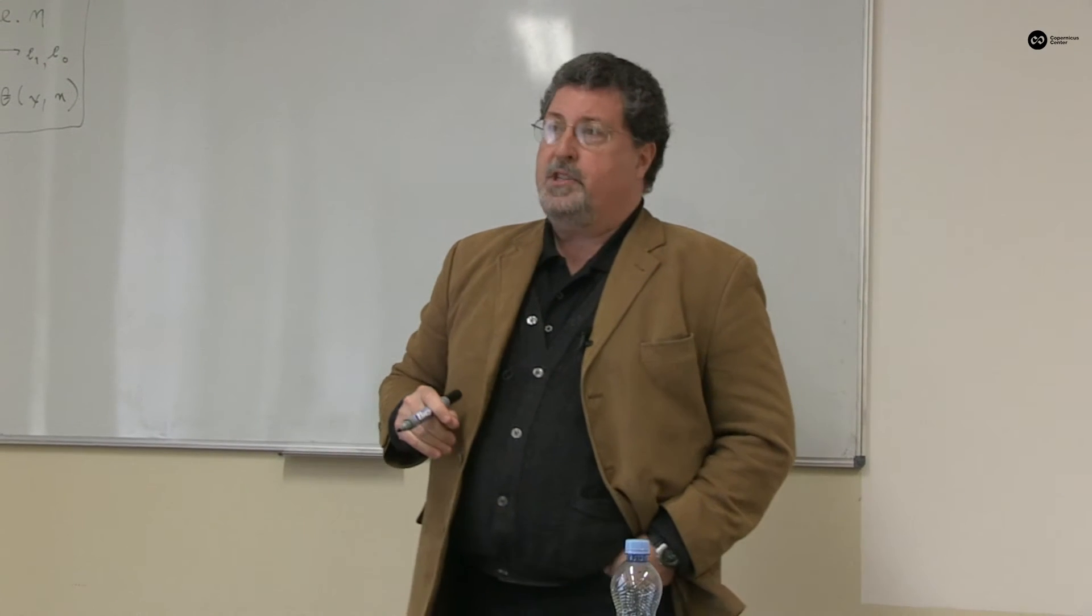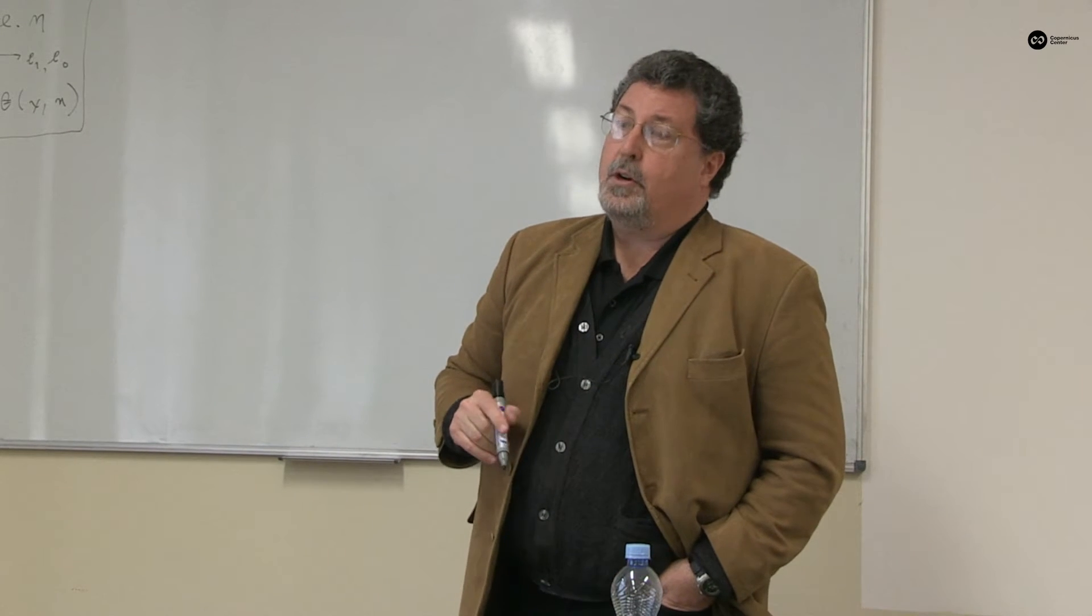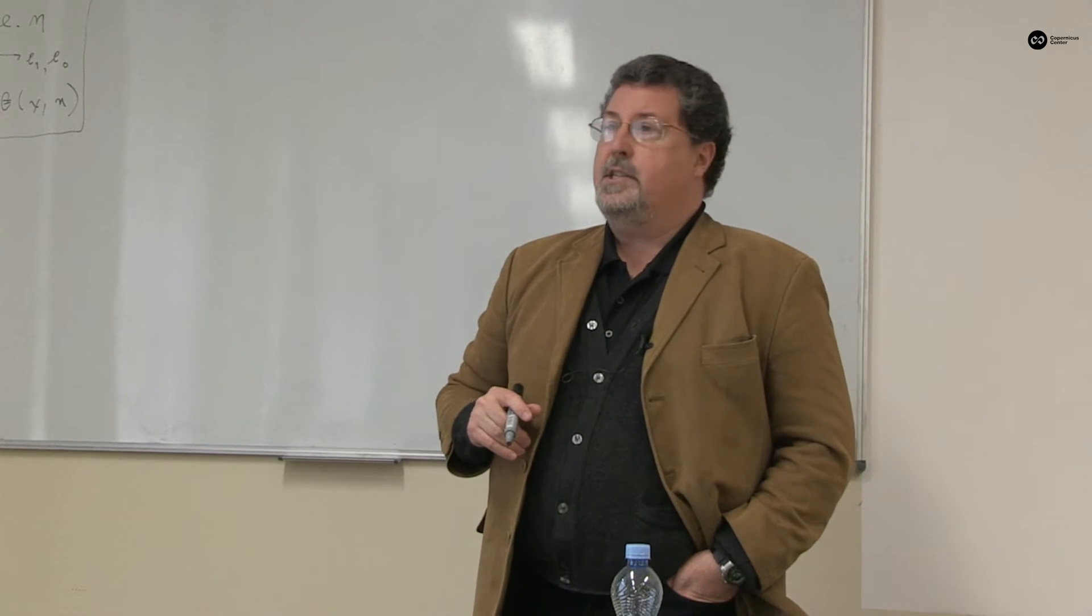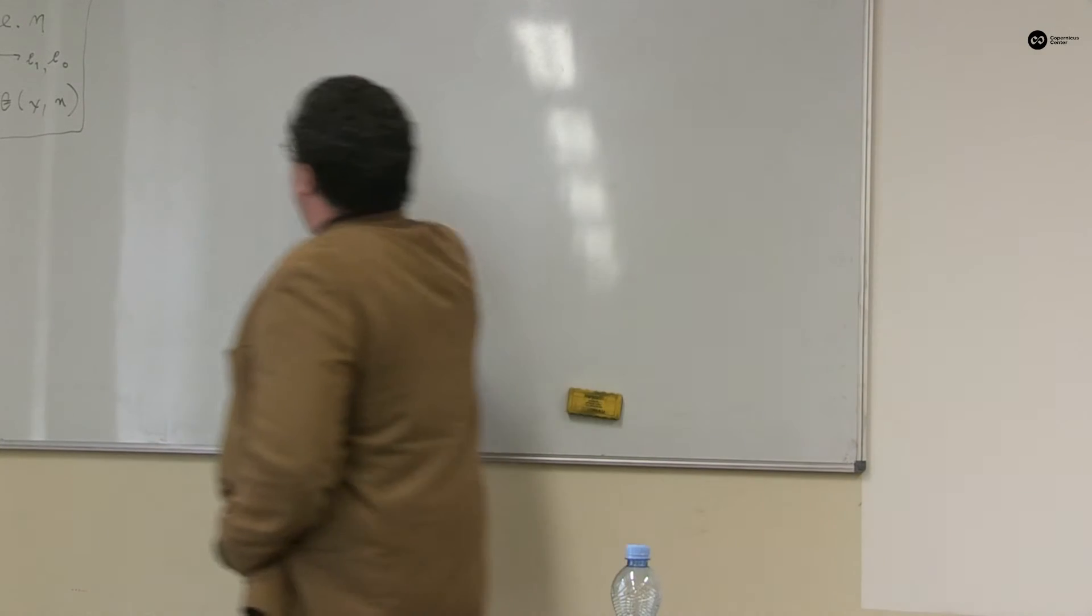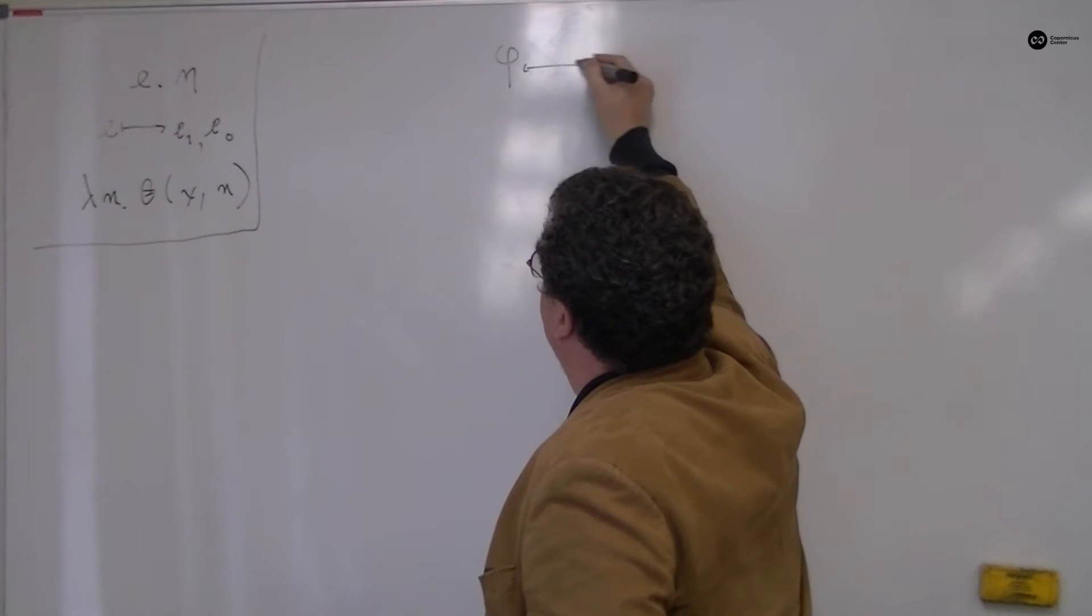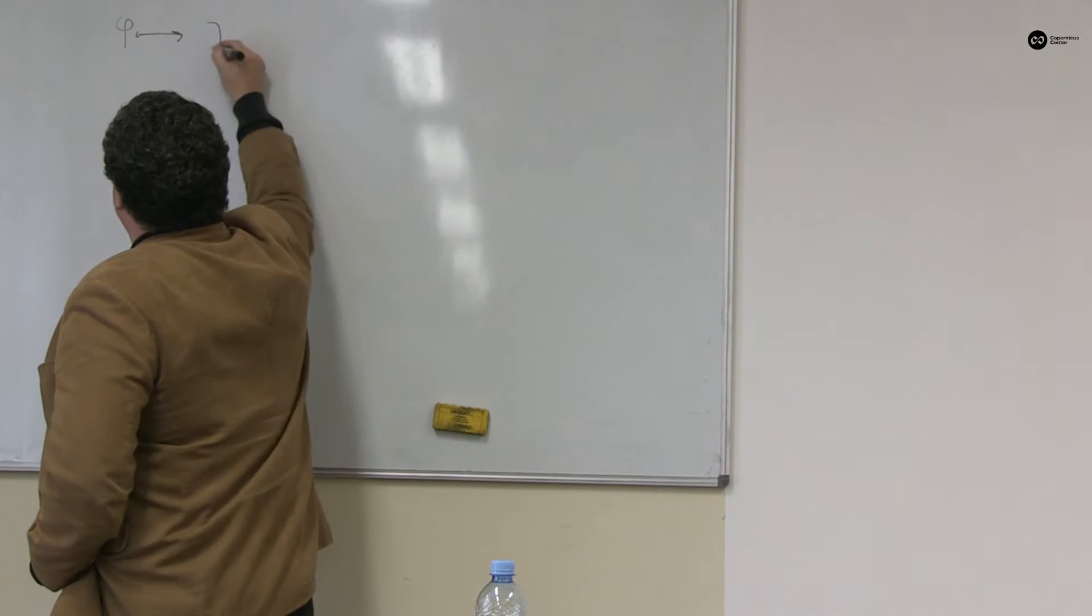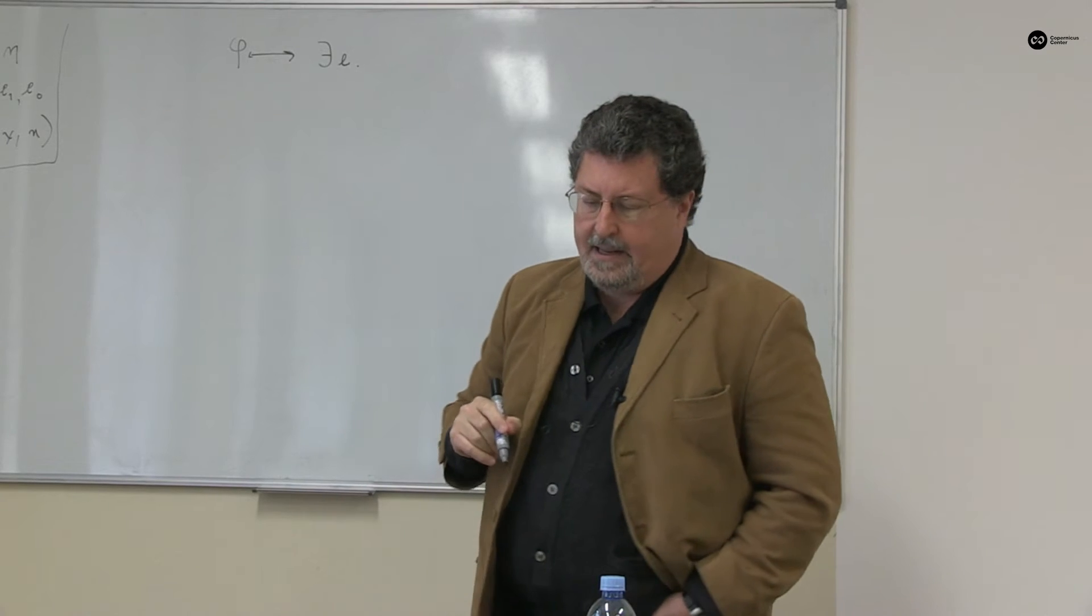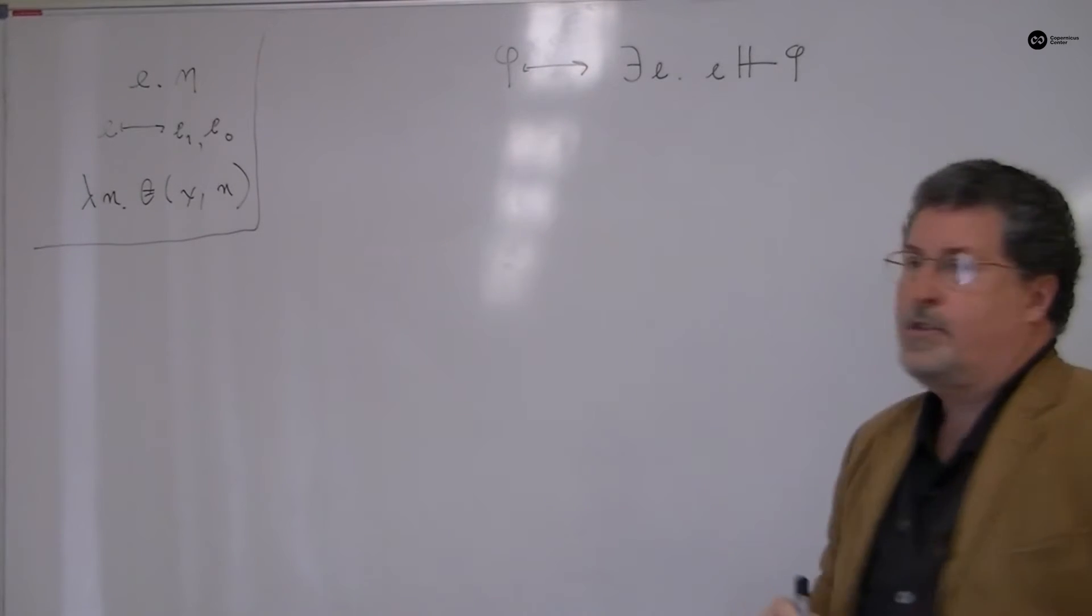The proof proceeds almost entirely from the intuitionistic version of what you could call the t-scheme. It corresponds in a rough way to Tarski's t-scheme from his great paper, the Wahrheitsbegriff. And I might write it this way: phi is a sentence or a sentence in parameters and it holds if and only if there is a natural number e that encodes a construction such that e constructs phi.